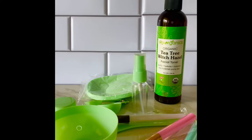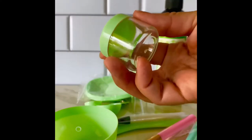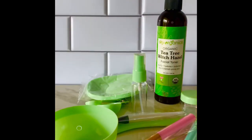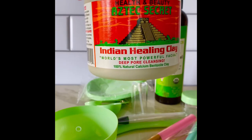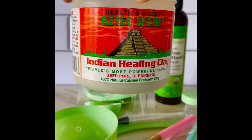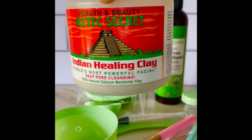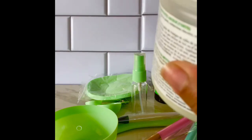And then as far as the small mask container, it is pretty small, but I'm going to fill it with the Azteca Secret Indian Healing Clay, also from Amazon. I just plan on putting that inside the little container just for easy access.